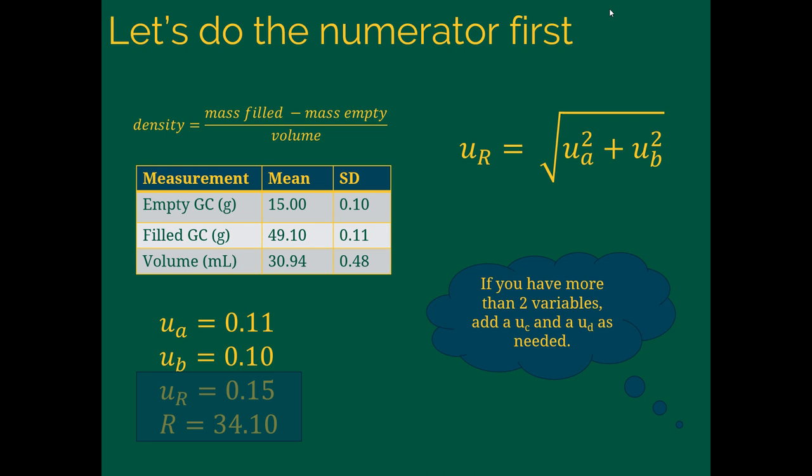You'll note in this simple experiment or simple example, we've only got two variables, and so we've got an A and a B. If you needed more, if you have multiple things that you're adding and subtracting, you can just daisy chain on a C, an uncertainty in D, and the equation would keep on going. These would just be underneath that square root term, and you put in as many as you need.